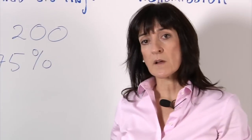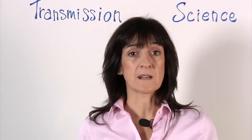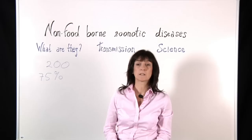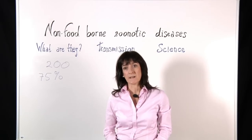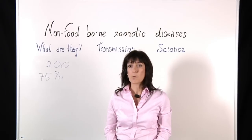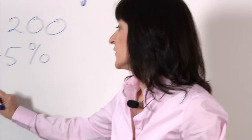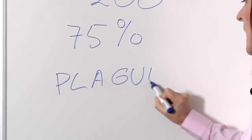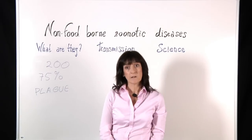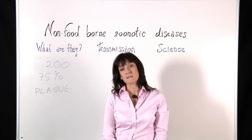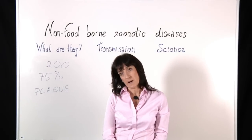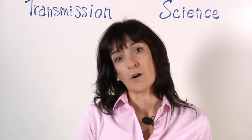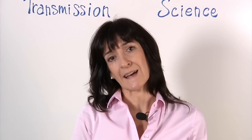We often think about zoonosis as foodborne diseases — for example, salmonellosis, a disease that is contracted by the consumption of contaminated food. But there are other ways of transmission. You might remember a disease called plague, a disease caused by a bacteria originated in rats and transmitted by flea bites.